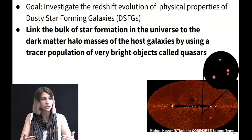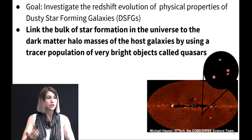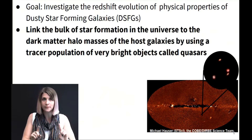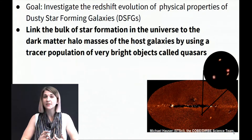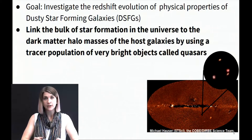We're trying to link the bulk of star formation in the universe to the dark matter halo masses of the host galaxies by using a tracer population of objects called quasars. The only things we need to know about quasars for this study are that they're very bright and that we have a very large statistical sample out to high redshift from the Sloan Digital Sky Survey. That means we know the redshifts of quasars very well and we can use them to probe the environments around the quasars.